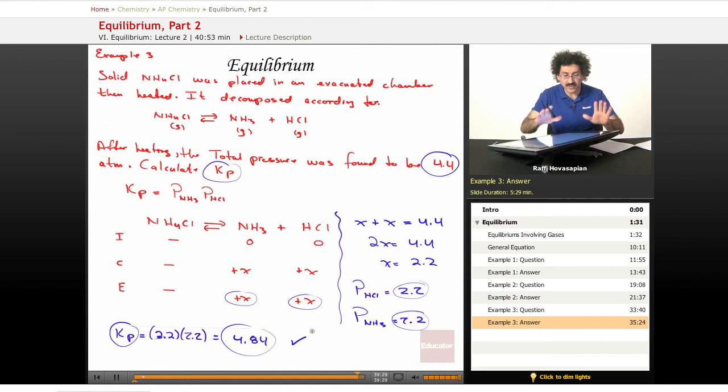So they gave us a certain amount of information. They gave us an equation to work with. We wrote down the Kp expression. We wrote down the equation. We wrote an ice chart, initial, change, equilibrium. Ultimately, it's the equilibrium that we're concerned with because the system has come to equilibrium. We followed it. We get X and X. They tell us that the total pressure is 4.4.